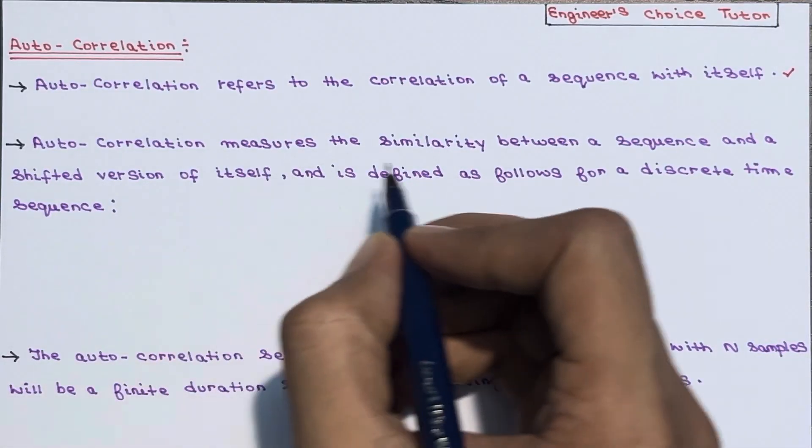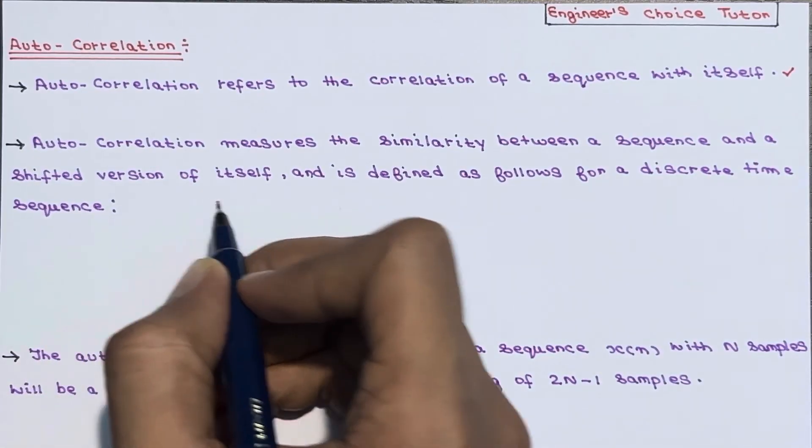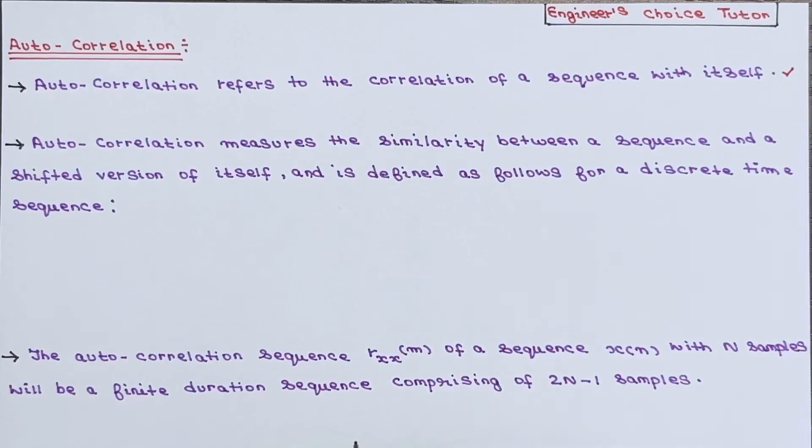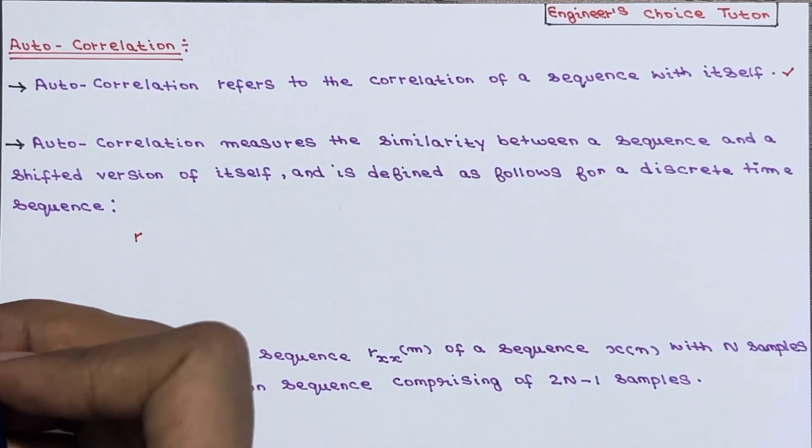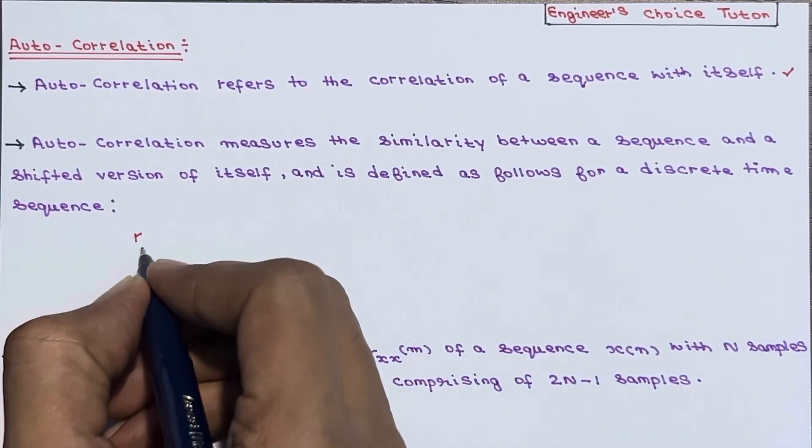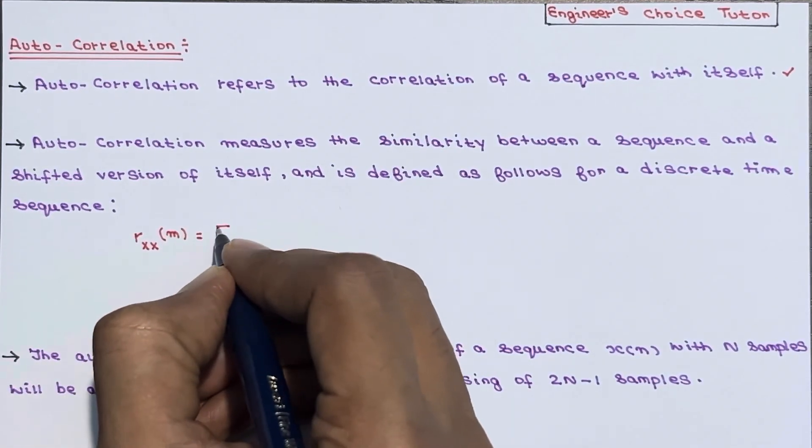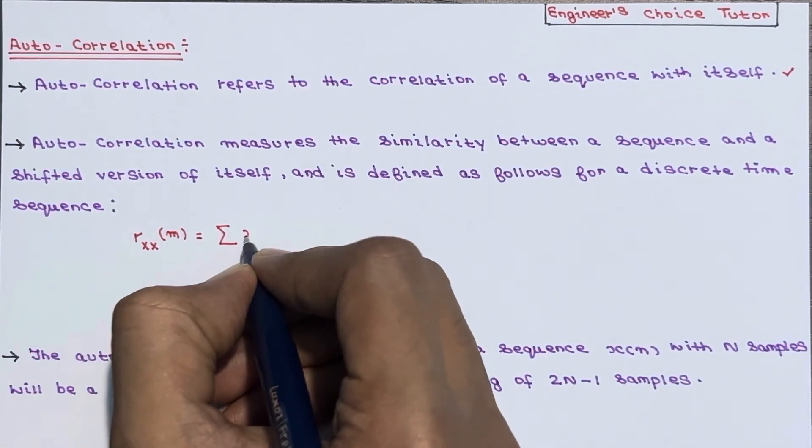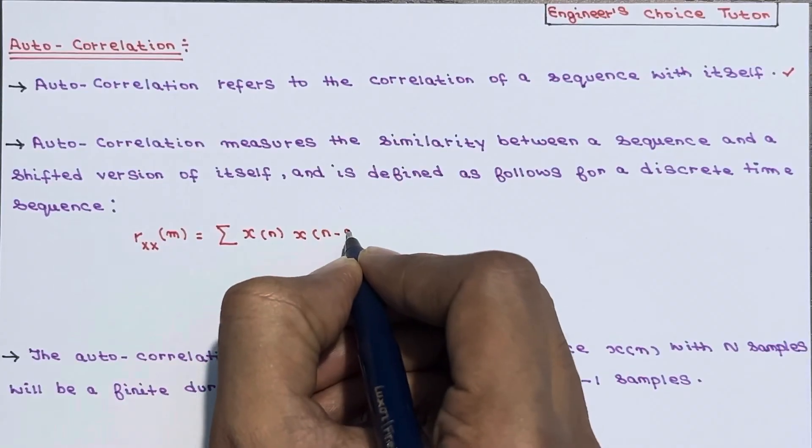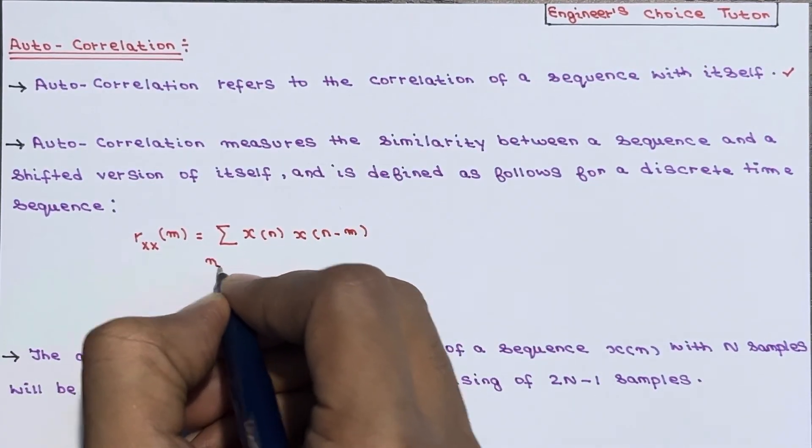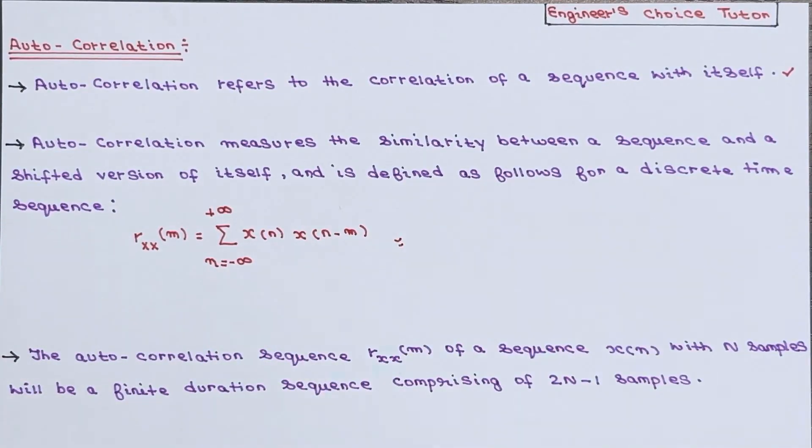So auto-correlation measures the similarity between a sequence and a shifted version of itself and is defined as follows for a discrete time sequence. R, this time you are going to compare with the shifted version of the same signal, so xx, function of m. This will be equal to summation of x of n and shifted version x of n minus m where the limit of n ranges from minus infinity to plus infinity. So this is the formula for auto-correlation.